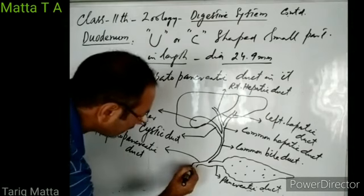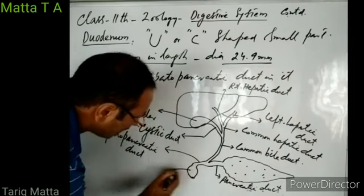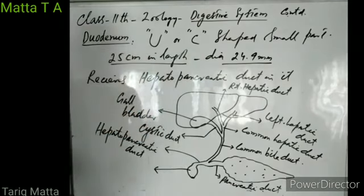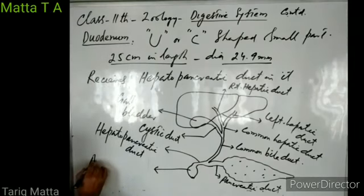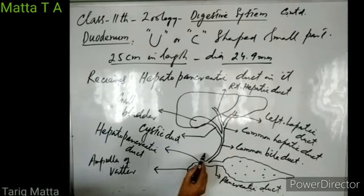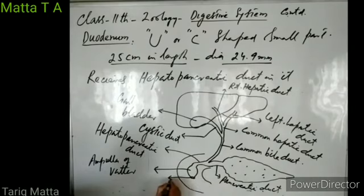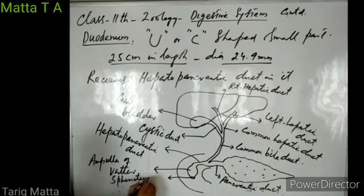This hepatopancreatic duct dilates before opening into the duodenum. This dilation is known as the ampulla of Vater. Through this ampulla of Vater, the hepatopancreatic duct opens into the duodenum, guided by a sphincter known as the sphincter of Oddi.